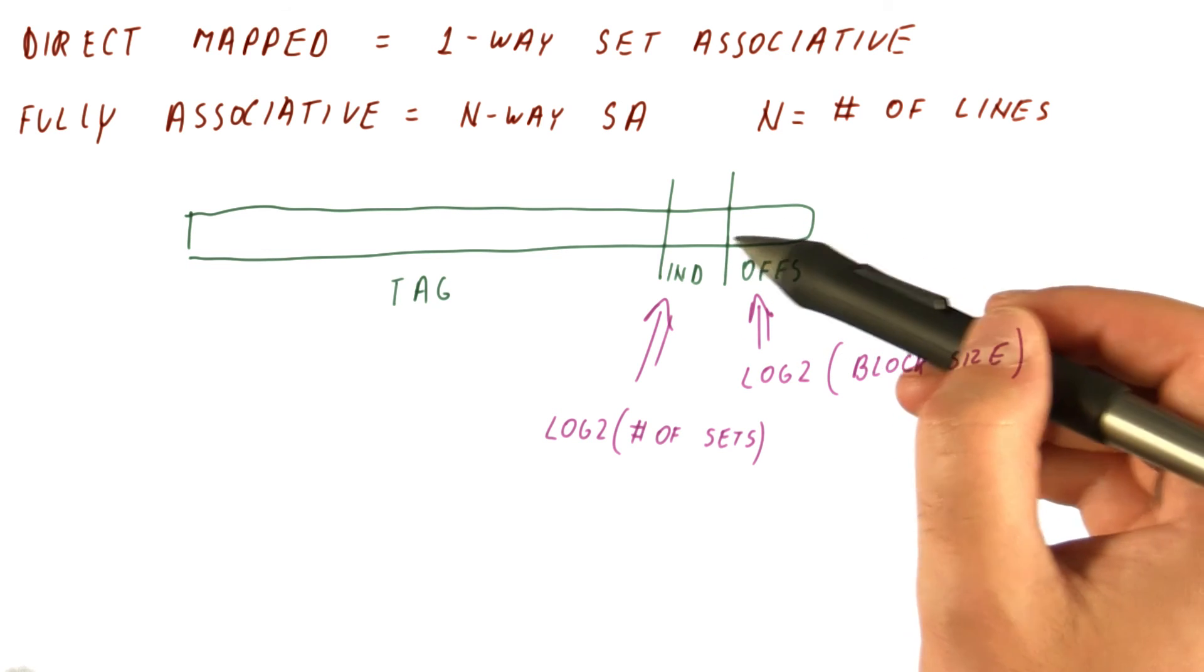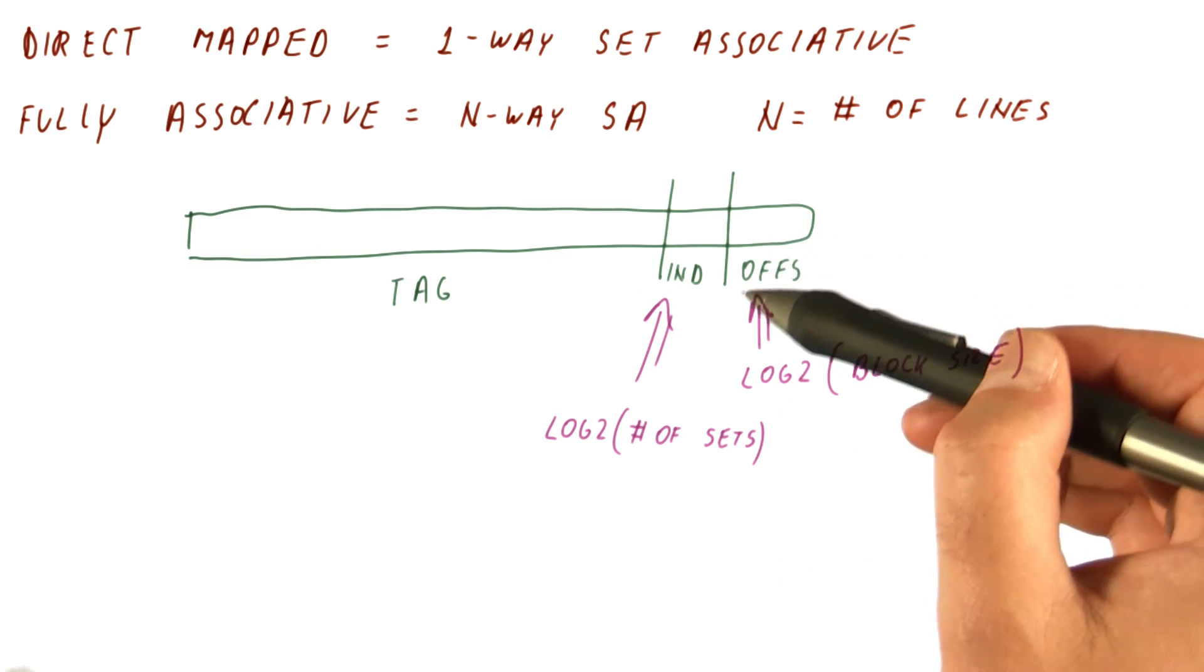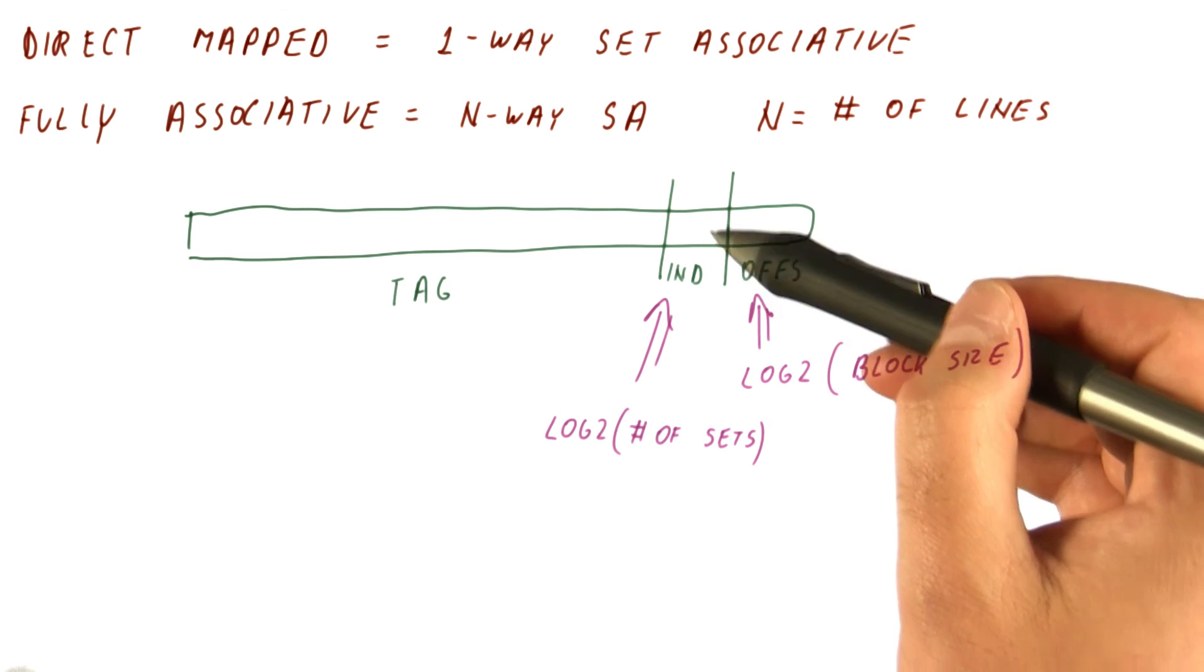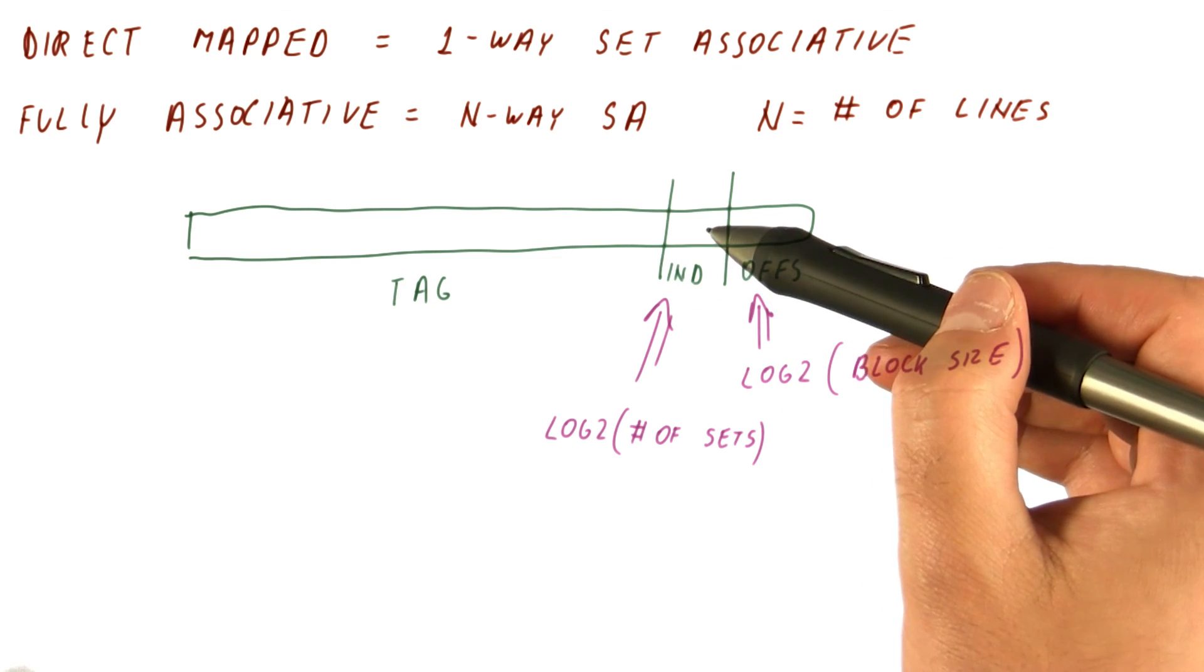So make sure that when you're determining these bits, you do it in that order. First figure out how many offset bits. Then the next so many bits are the index bits, and then the rest is the tag.